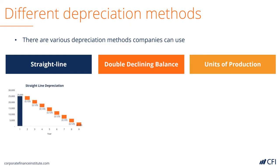In the straight line approach, an equal amount of depreciation is applied every year for the asset's useful life. The formula is equal to the cost minus the salvage value divided by the useful life in number of years. As you can see in the graph, an equal amount is expensed every year until it reaches the salvage value.